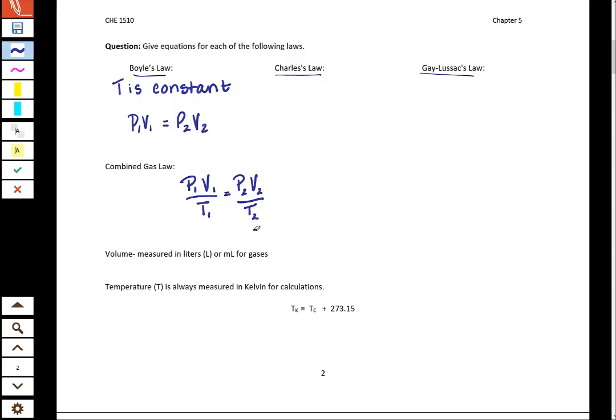Then we're going to do the same thing with Charles's Law. We're going to take the Combined Gas Law, pressure is constant in this case, and so we leave the pressure out and write the remaining variables. And then finally, in Gay-Lussac's Law, volume is constant. I'm looking at the Combined Gas Law and leaving out the volume variable to get Gay-Lussac's Law.